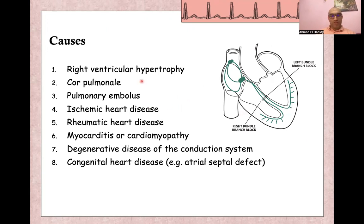Right bundle branch block has many causes, like right ventricular hypertrophy, core pulmonary embolism, ischemic heart disease, rheumatic heart disease, myocarditis or cardiomyopathy, degenerative disease of the conducting system, or congenital heart disease like atrial septal defect.